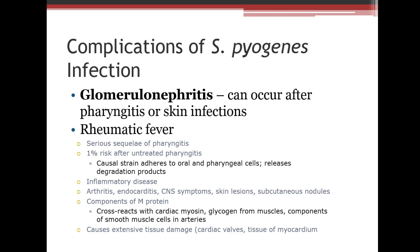Complications of strep infection include glomerulonephritis, causing glomerular basement membrane issues and red blood cell casts in urine. Rheumatic fever is a severe side effect — about 1% of untreated strep patients develop an inflammatory disease affecting cardiac valves and myocardium, with symptoms including arthritis, endocarditis, central nervous system symptoms, skin lesions, and nodules. This is driven by the M protein, so treating strep promptly is important.